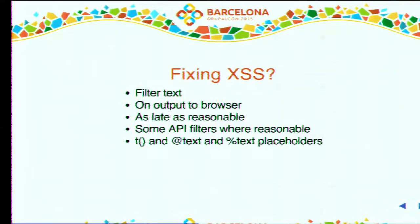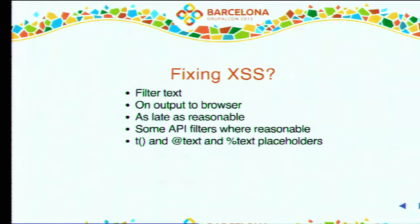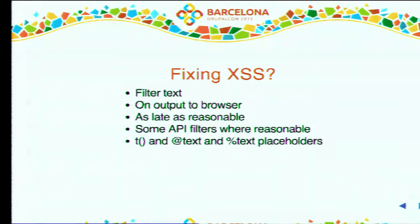One example for avoiding cross-site scripting is using the T function to translate text, using placeholders with the @ sign or the % sign — they will do the escaping for you. Whenever you pass a variable to your translatable string, it will get automatically escaped. This is used all over Drupal core, and the Form API filters for XSS for you. However, it's not entirely consistent — for example if you build a theme table and put a node title in it, nothing gets escaped automatically, so we have to be careful as module developers and themers.